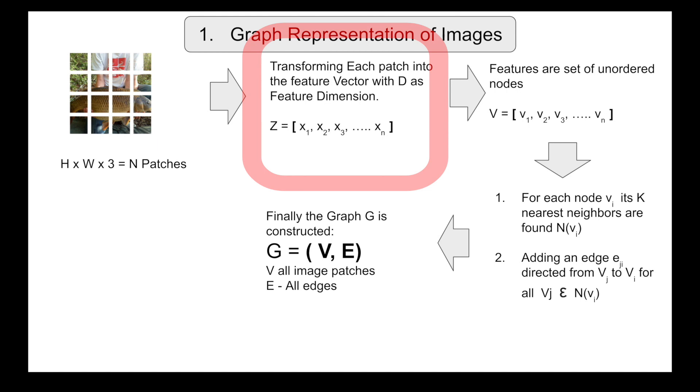So Z here references all those feature vectors for every given patch. And using these features, you're going to constitute your unordered set of nodes. So the nodes here V is going to have all V1 to VN depending on your N patches. Each node is going to represent one patch and the feature vector for each node is associated as X1.